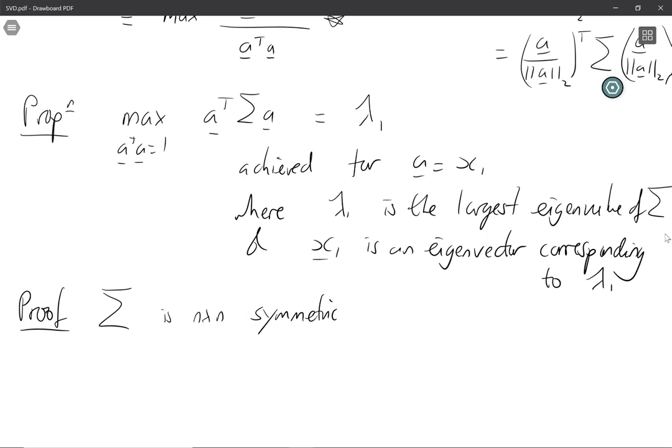So we can write it using its spectral decomposition as UΛU^T where U is the matrix of all the normal eigenvectors and Λ is a diagonal matrix of eigenvalues and U contains eigenvectors or the orthonormal eigenvectors.